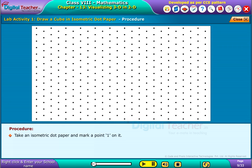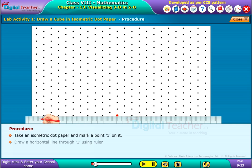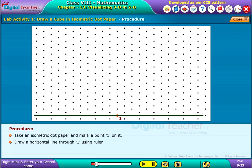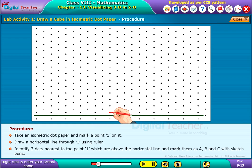Take an isometric dot paper and mark a point 1 on it. Draw a horizontal line through 1 using ruler. Identify 3 dots nearest to the point 1 which are above the horizontal line and mark them as A, B and C with sketch pens.